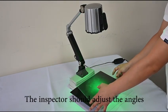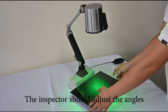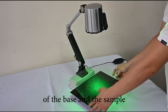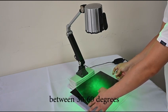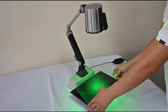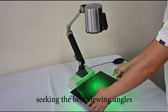During inspection, the inspector should adjust the angles of the base and the lamp head between 30 to 60 degrees, setting the best viewing angles.